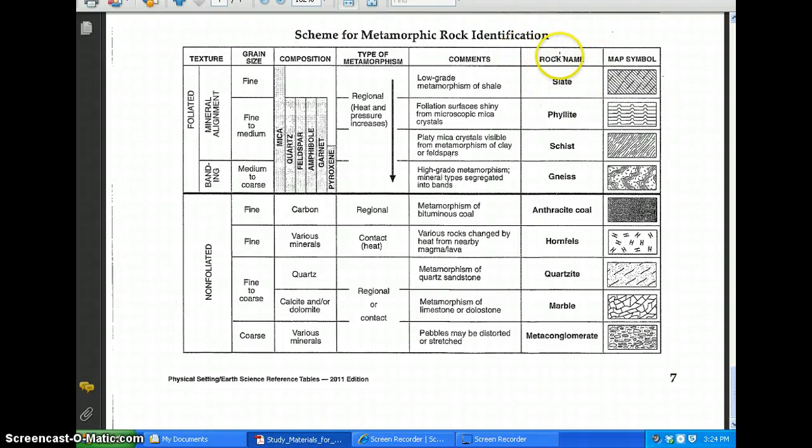Then next to the last column, we have our rock names and then we have our map symbols. So, slate all the way to gneiss, these are foliated. Anthracite coal all the way to metaconglomerate, these are non-foliated.